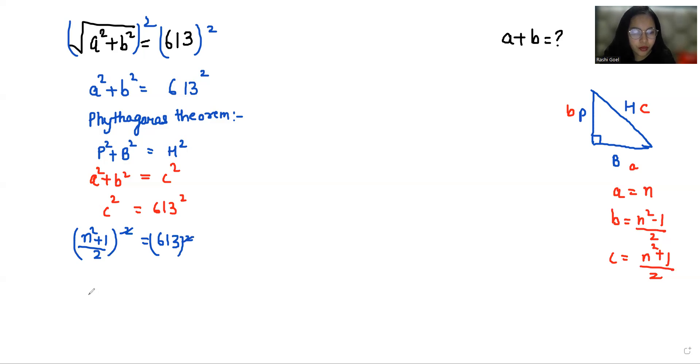We can cancel out this square from both sides. So n² + 1 = 613 × 2. So n² + 1 = 1226. So n² = 1226 - 1.